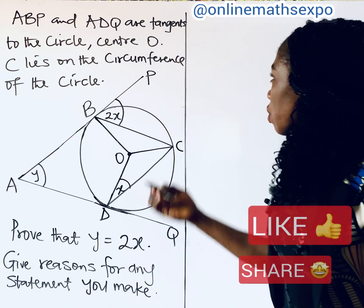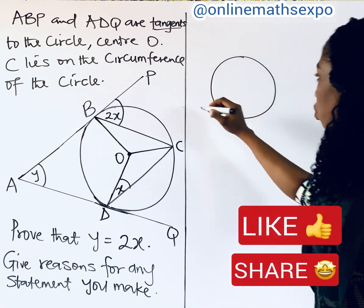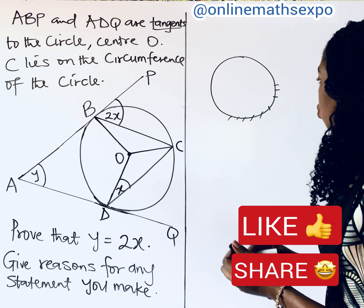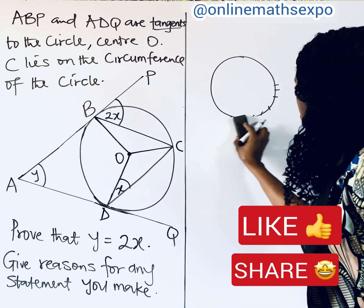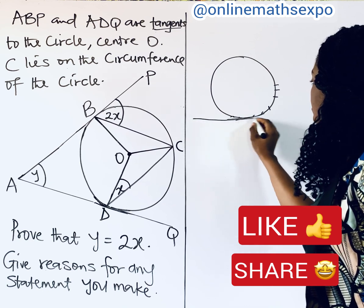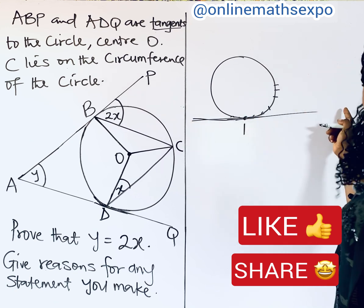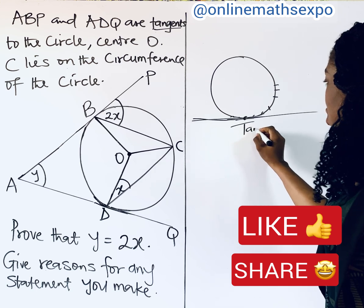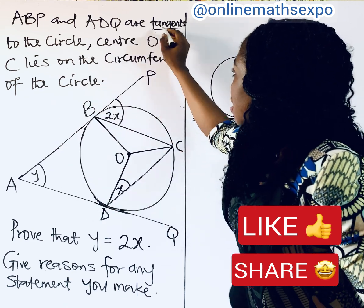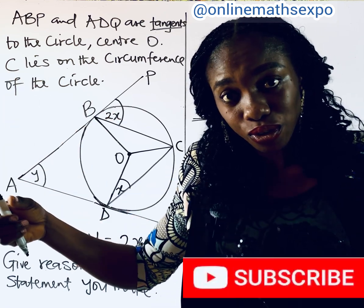Just remember: when we talk about tangents, it means we have a circle. The outer part of this circle is what we call the circumference. When you draw a line that touches the circumference at a point, that is called a tangent line. Since the question mentions tangents, please remember the theorems of tangents of a circle — it will help you a lot.